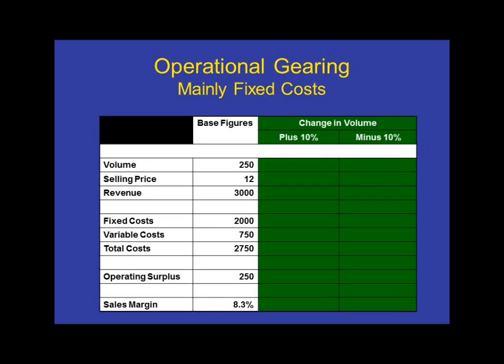But look what happens when, first of all, demand increases by 10%. The margin has now gone up to 14.4%. In other words, for every $100 of sales, the operating profit is now $14.40.